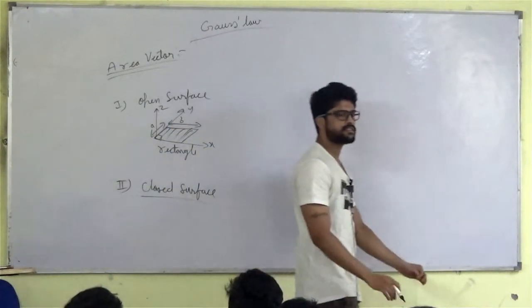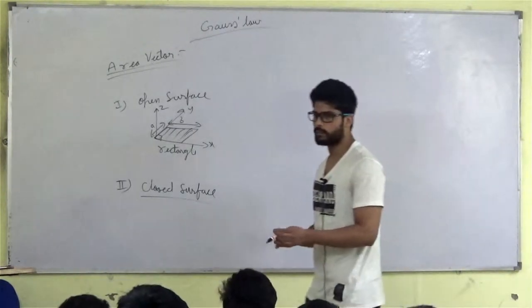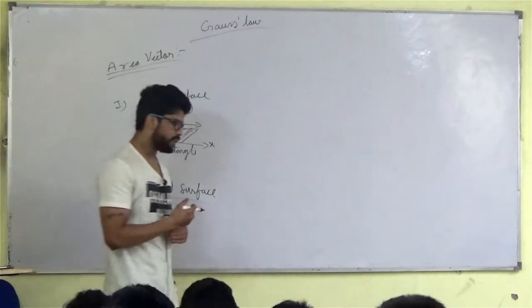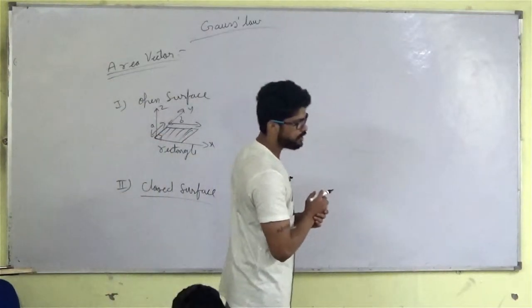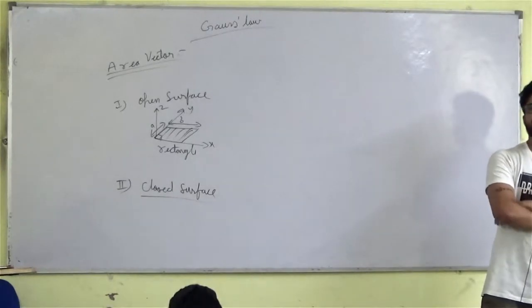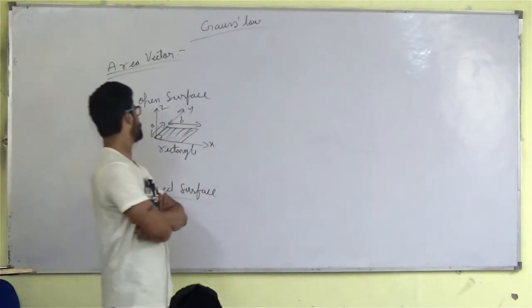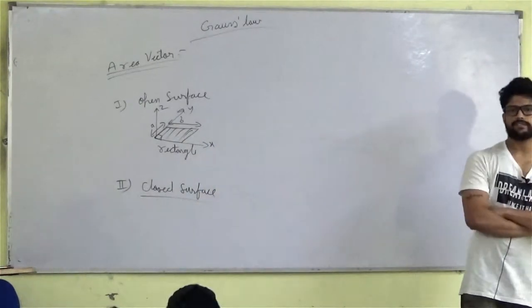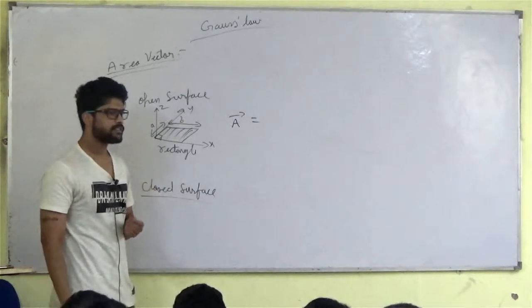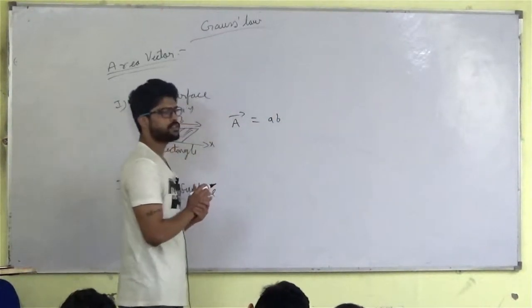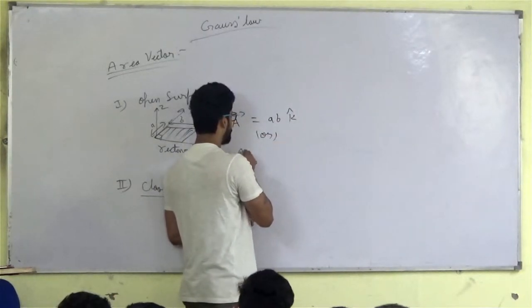First of all, you have to understand that the area vector is a vector. Area vector is a vector whose magnitude is equal to the surface area and direction is perpendicular to the surface. So tell me, the area vector here is the surface area is the rectangle A B, A into B, and this perpendicular direction is the z, so what do we do? A B K cap or minus K cap?